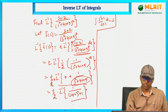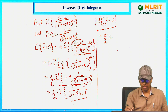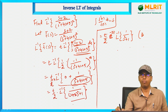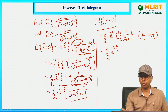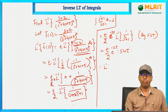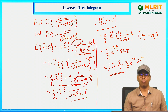Now L inverse of 1/(s²+4s+5) = L inverse of 1/((s+2)²+1). Applying the first shifting theorem with s+2, this equals e^(−2t) · L inverse of 1/(s²+1) = e^(−2t) sin(t). Therefore, L inverse of f̄(s) = (t/2) e^(−2t) sin(t). This is how we find the inverse Laplace transform using integrals.